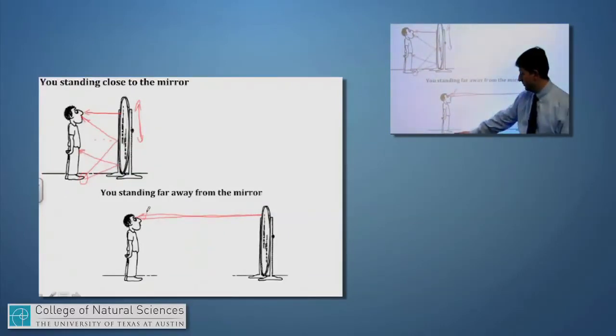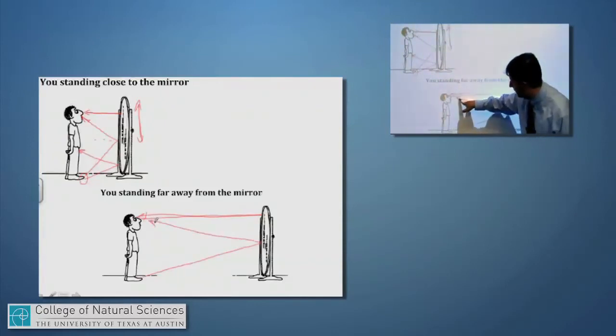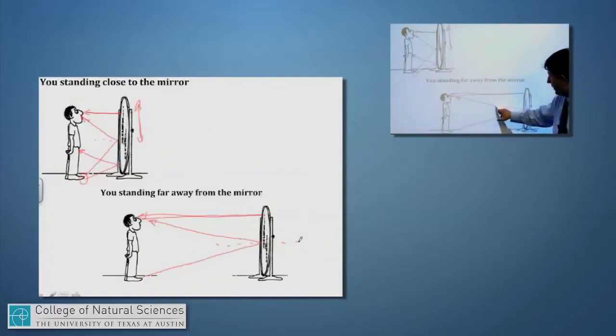Light from my toes would travel up to the mirror in all different directions, but the one that's going to hit my eyes are the ones that travel half the distance up and half the distance back so that they obey the law of reflection that those two angles are equal. And once again, I only need half the mirror. I need the same half the mirror as I needed when I was standing very close to the mirror. And in both cases, I'll be able to see my entire reflection.